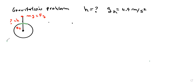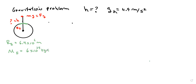You have some data. The radius of the Earth is 6.4 times 10 to the 6 meters. The mass of the Earth is 6.6 times 10 to the 24 kilograms. And we have G, the gravitational constant, which is 6.67 times 10 to the minus 11 newton meters squared over kilograms squared.